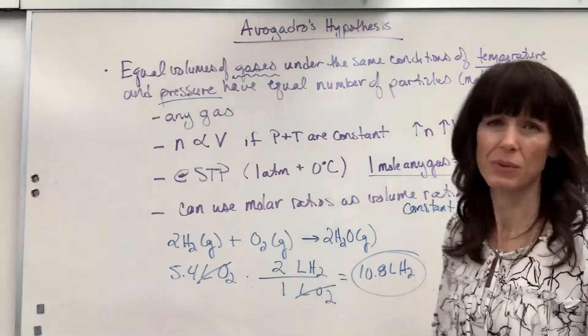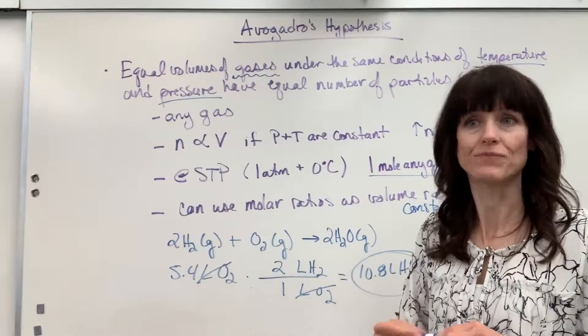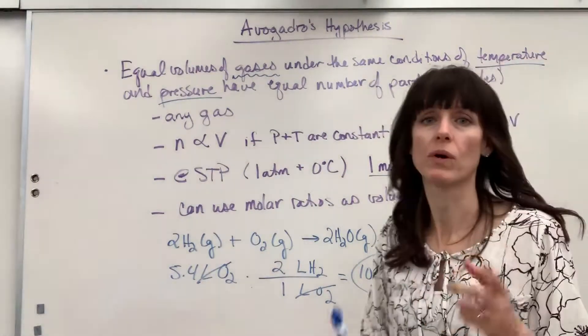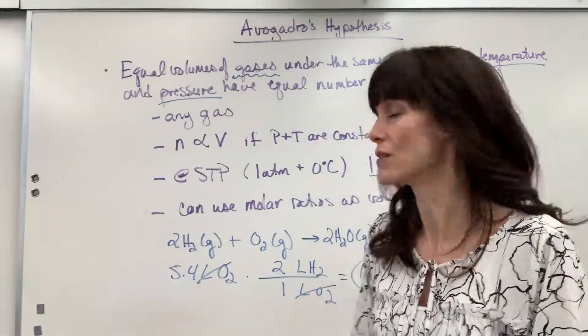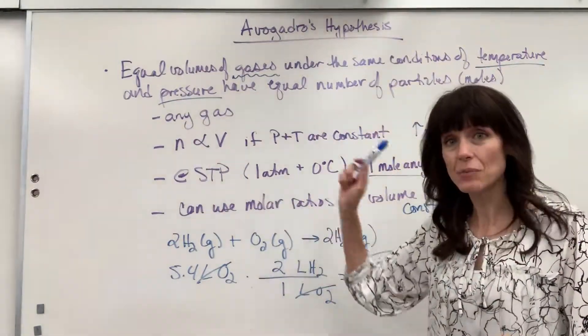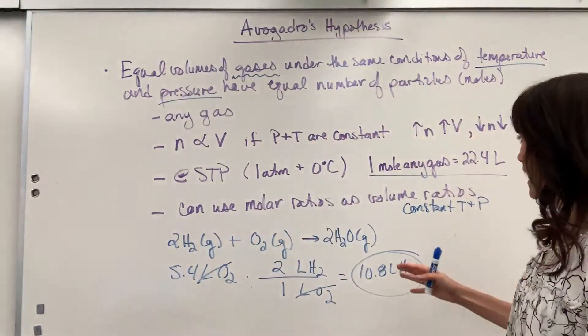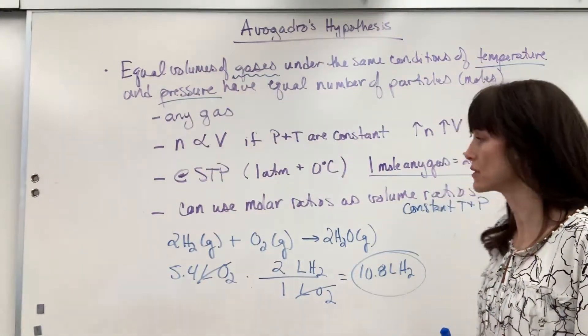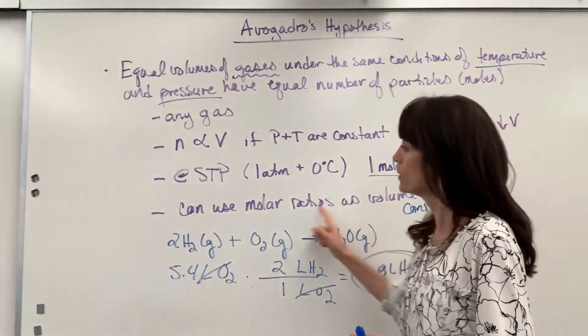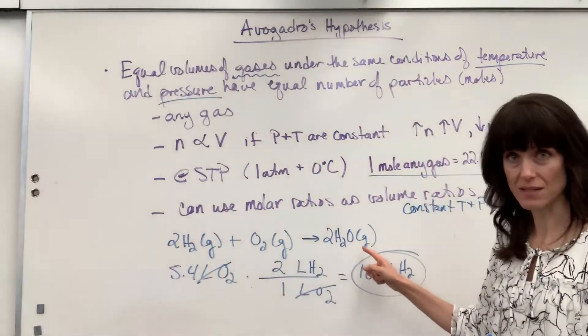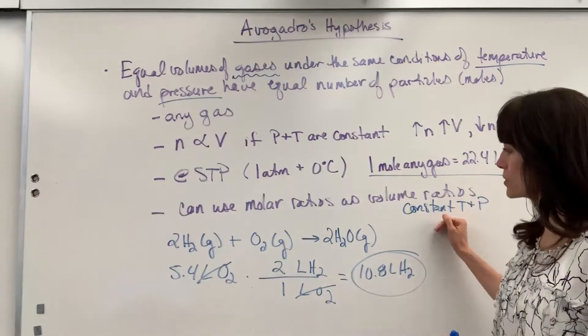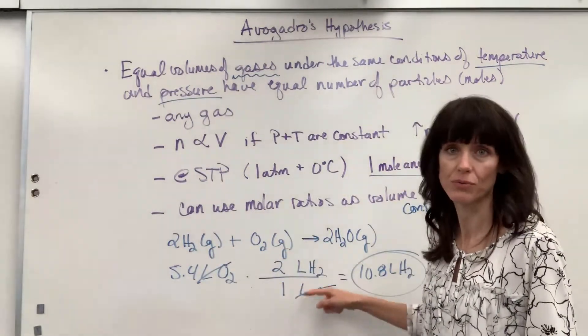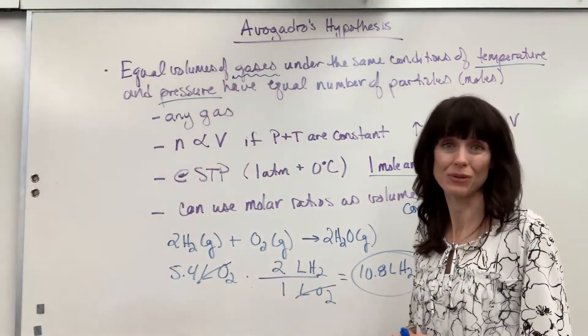So, three really big applications that we use often from Avogadro's hypothesis. Number one, ideal gas law. Go watch those videos. Number two, at STP, any gas, one mole of that gas takes up a volume of 22.4 liters. And then lastly, when you have gas phases at constant temperature and pressure, you can use the molar ratios as volume ratios and do stoichiometry as volume. Pretty cool.